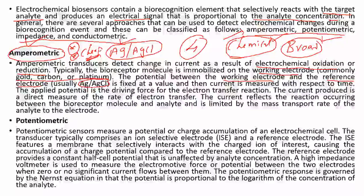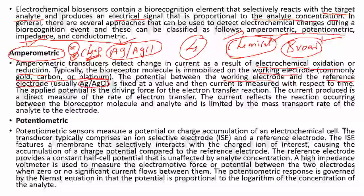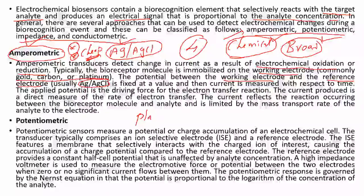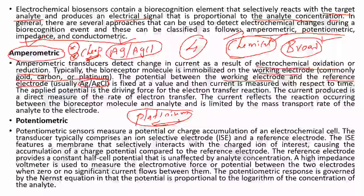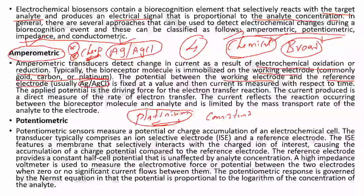Ag/AgCl electrodes are preferred because they are pretty cheap to install and maintain, and produce minimal noise in biomedical signals. Other electrodes like platinum exist, but the Ag/AgCl oxidation-reduction process is very consistent with low noise.